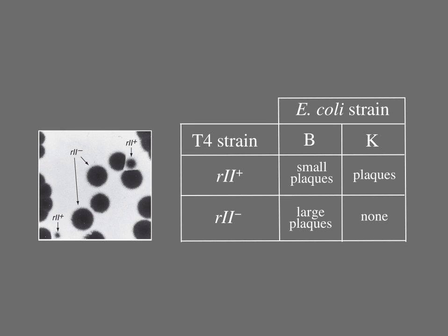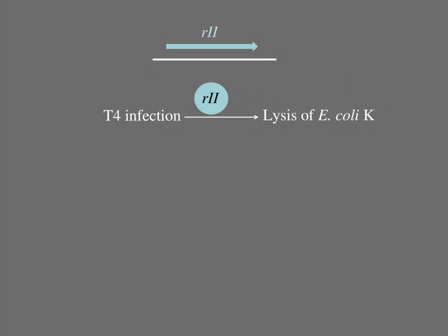Benzer realized that before he did the recombination experiment, he needed to be sure that his R2 mutant strains all had mutations in the same gene, otherwise his experiment wasn't testing the nature of a gene. All of his R2 mutants had the same mutant phenotype, larger than normal plaques on E. coli B, and all of them mapped to a specific location on the T4 phage genome. One possibility is that all the different R2 mutant strains have mutations in the same gene, R2, which makes the single protein required for the phage to grow using E. coli K as a host.